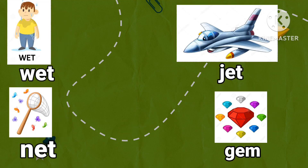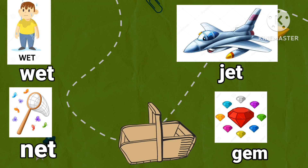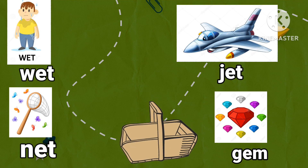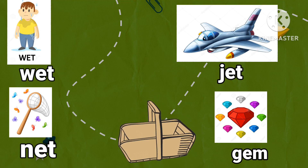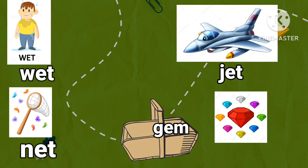Next. Wet, net, jet, jam. Wet, net, jet, jet. Pick out the word that does not rhyme in this group. Jam. Pick up the word jam and drop it in the basket.